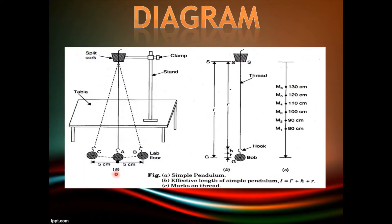Diagram: You can see here three figures A, B and C. Figure A is showing the experiment setup where you can see the pendulum suspended with the help of split cork, clamp and a stand. Position A is the main position; B and C are the two extreme positions when the pendulum starts oscillating. Figure B shows the effective length of the simple pendulum — from point of suspension to the center of the bob.